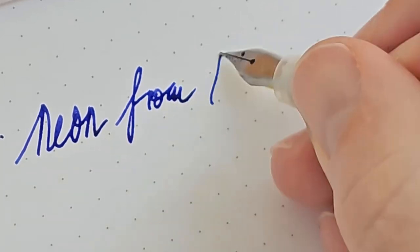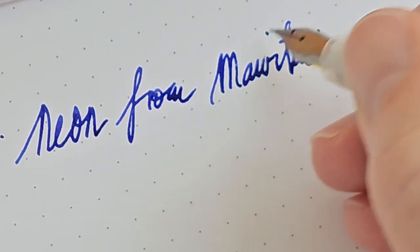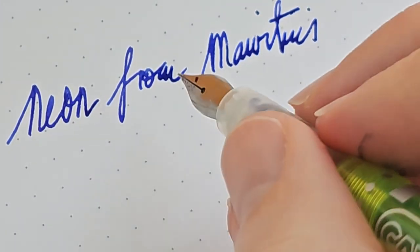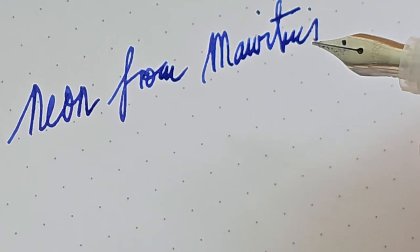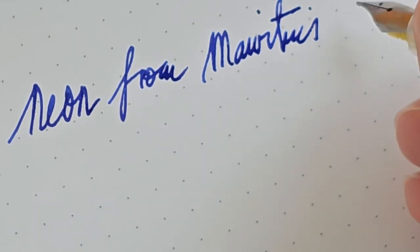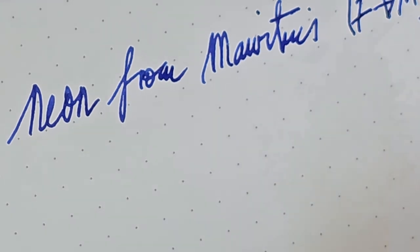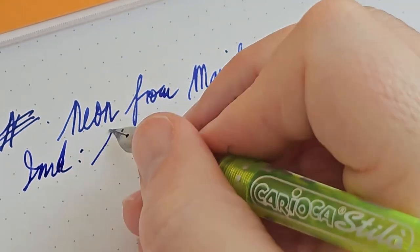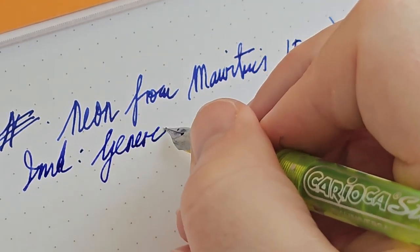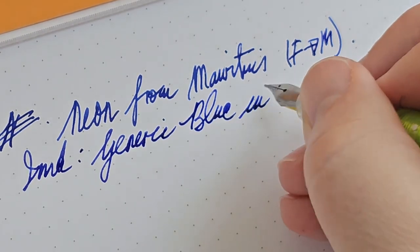Let's see, this is the Neon from Mauritius. I just needed to give it a minute there. What is the size of this nib? I would say that it is somewhere between a fine and a medium. No idea what it really is. The ink in here would be, I'll just call it generic blue ink.